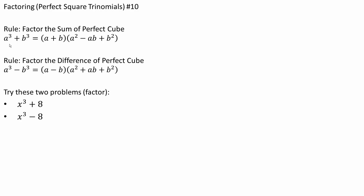So if you have a cubed plus b cubed, when we factor it we get: (a + b)(a² - ab + b²). And if you have a cubed minus b cubed, then the answer will be: (a - b)(a² + ab + b²).